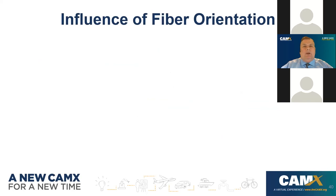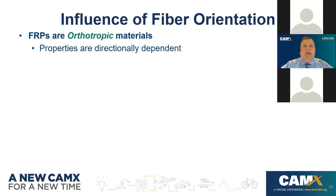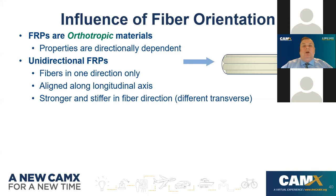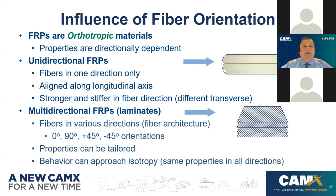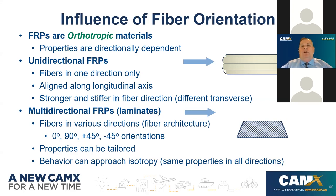There is a particular chemical treatment applied to fibers called sizing, which influences the bond between fiber and matrix — a critical factor. FRPs are orthotropic, meaning properties are directionally dependent. With unidirectional fibers aligned along the longitudinal axis, the composite is strongest and stiffest in that direction but weaker transversely. We combat this with multidirectional FRPs and laminates — stacking various plies with fibers placed at 0°, 90°, +45°, and -45°, so properties can be tailored and behavior can approach isotropy, where properties are the same in all directions.